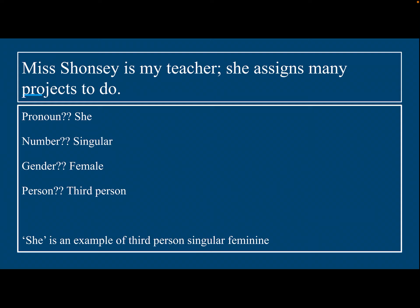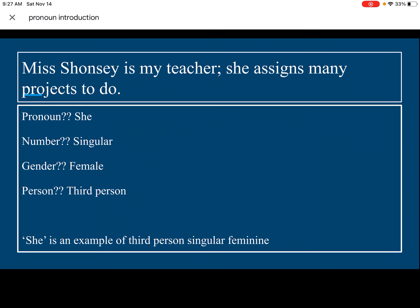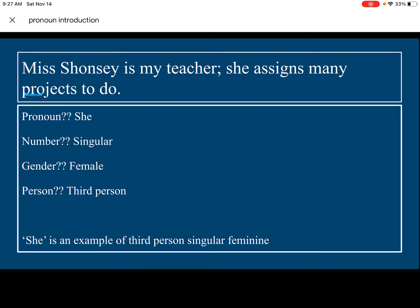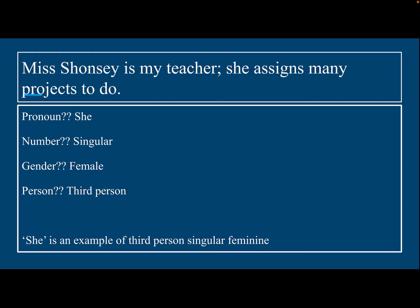'Miss Chauncey is my teacher. She assigns many projects to do.' The pronoun is she. What is she replacing? Miss Chauncey. Number — it's singular; there's just one Miss Chauncey. And it's feminine — she is female. What person is it? Third person, being spoken for. So we would say she is a third person, singular, feminine pronoun.